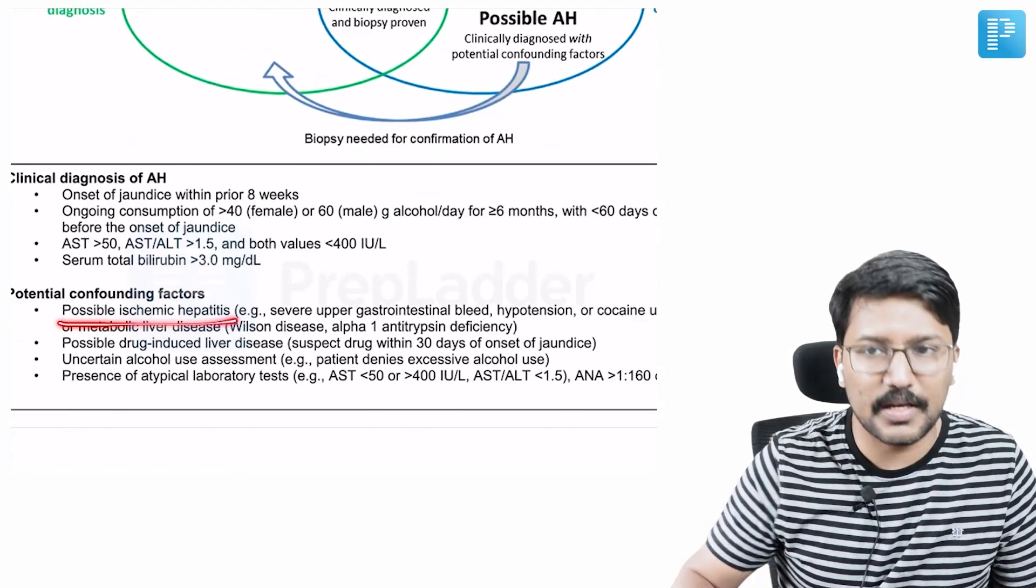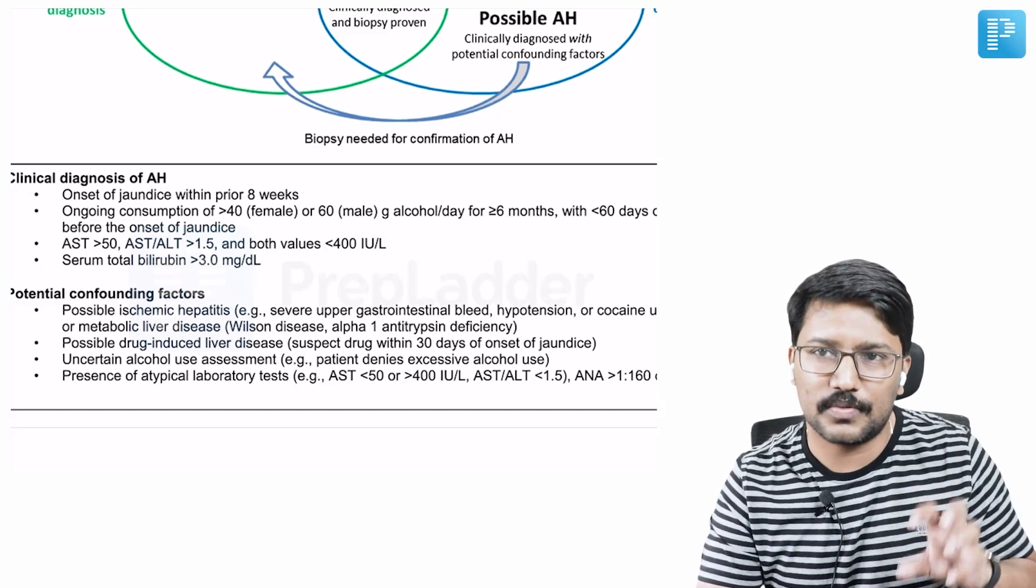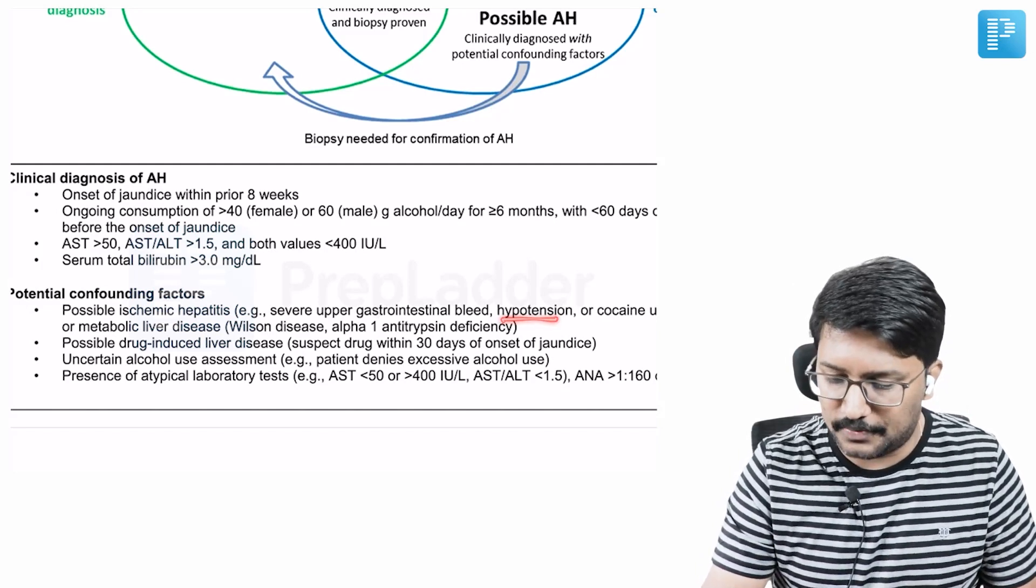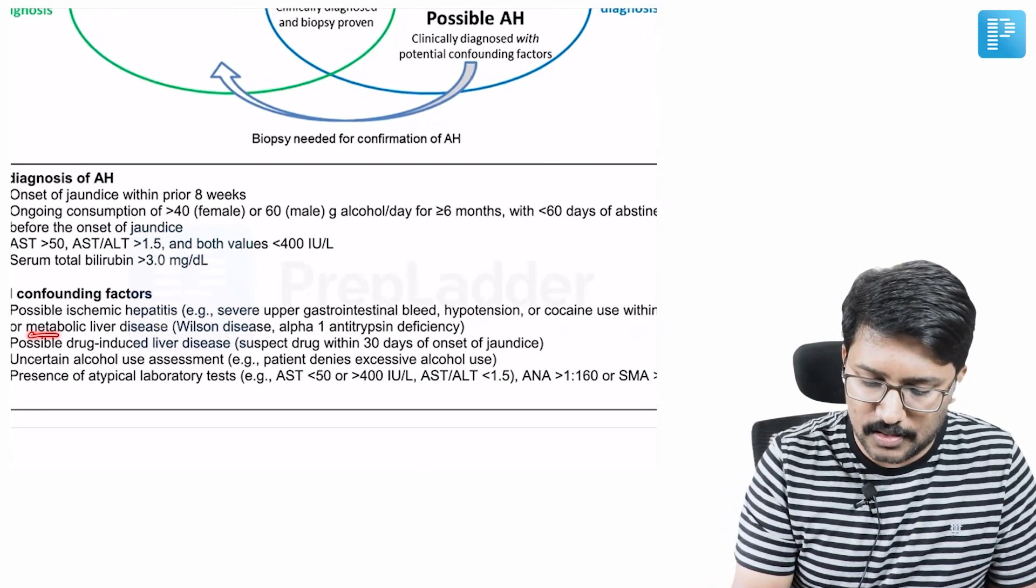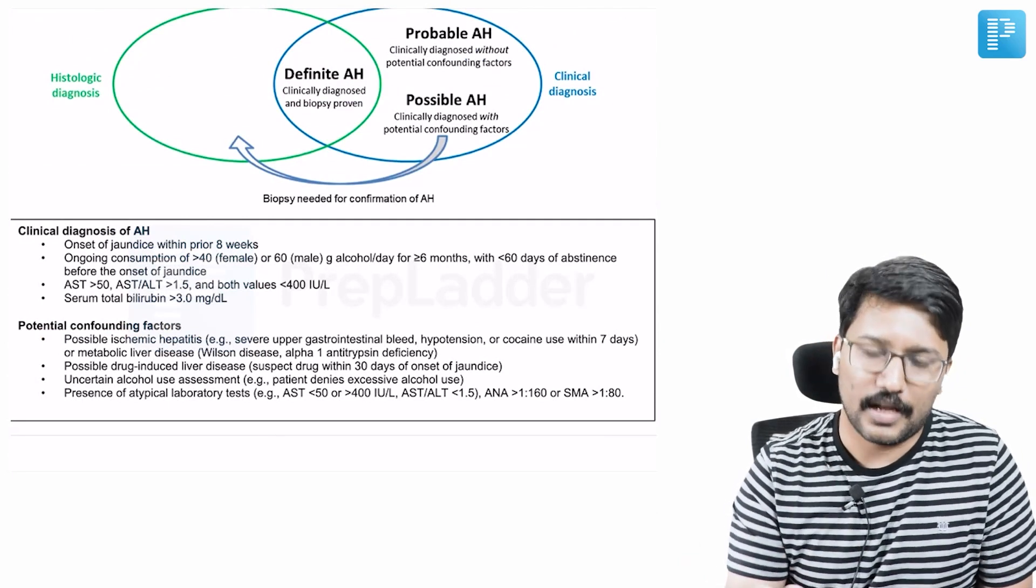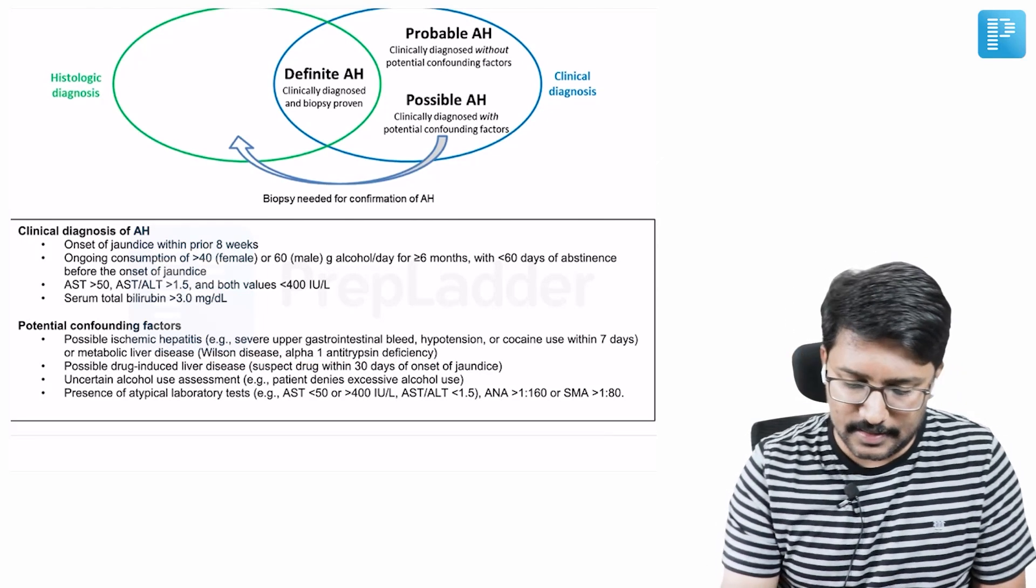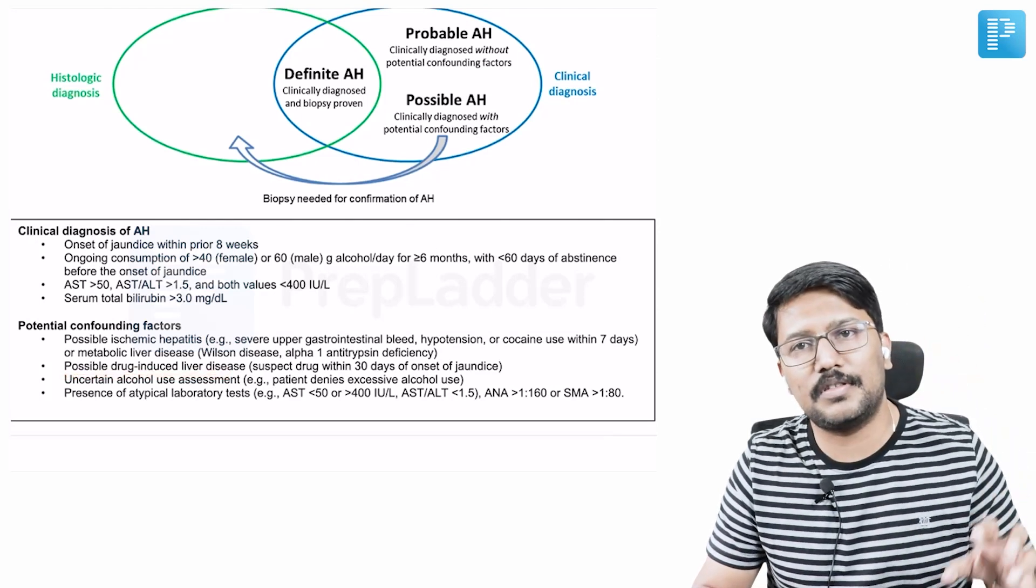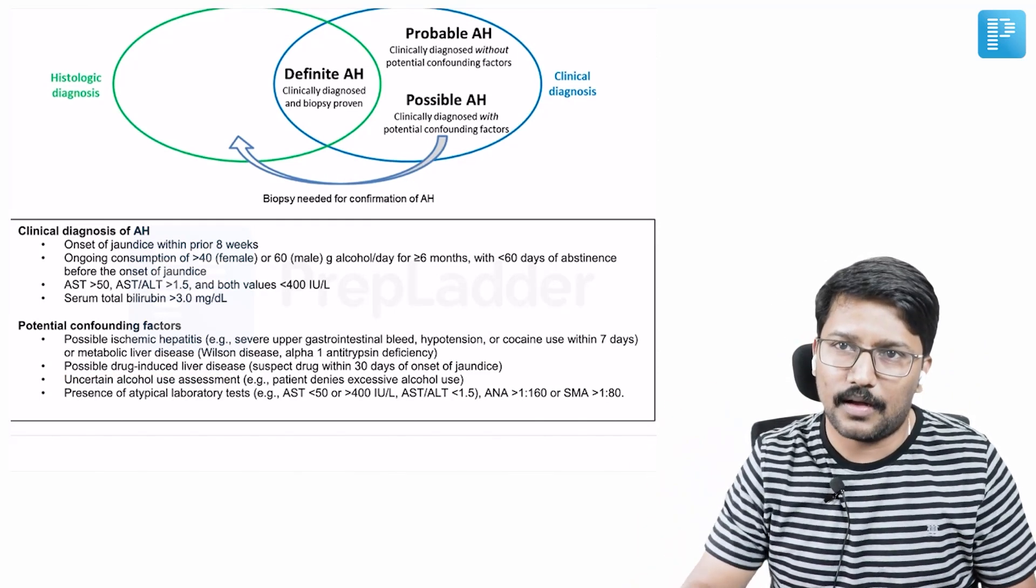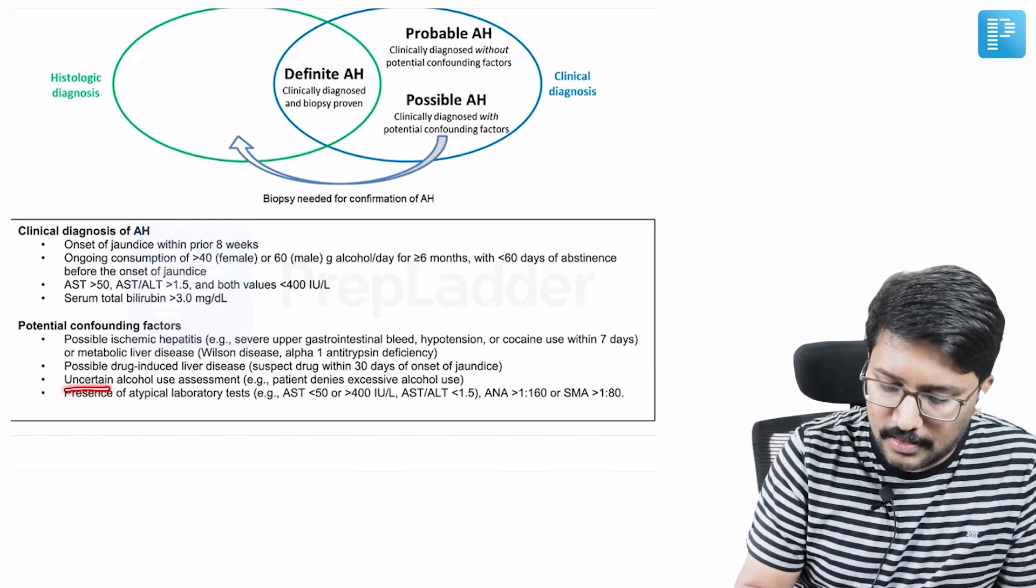What are those confounding factors? Possible ischemic hepatitis. For example, these chronic liver disease patients are prone to develop upper GI bleed that might cause some degree of hypovolemia, hypotension, and ischemia to the liver that can cause ischemic hepatitis. Or a patient had a frank episode of hypotension, or there is history of use of cocaine, which is a vasoconstrictor. Or if there is existing metabolic disease, which are also considered as a risk factor for ischemic hepatitis. Ischemic presence of ischemic hepatitis, or having other metabolic diseases like Wilson's disease or alpha-1 antitrypsin deficiency - those are considered as confounding factors. Similarly, if there is possibility of drug-induced liver disease, like patient has taken some drug which is known to cause liver injury within 30 days of the onset of symptoms, then both are possible. Alcoholics are vulnerable for drug-induced liver injury. Alcohol itself is making them vulnerable for alcoholic hepatitis. Both are a possibility, then that becomes the confounding factor.